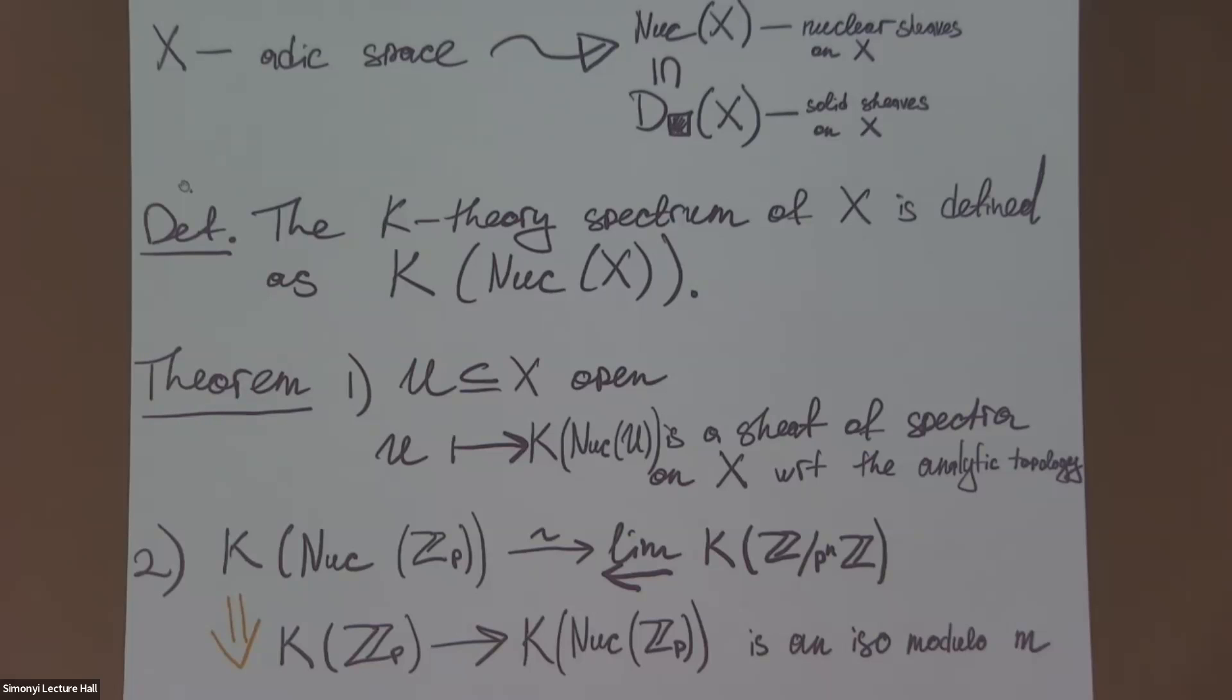I want to answer your question first. If m is prime to p, then this simply follows from Gabber's rigidity. In general you have to observe the following. Take the algebraic K-theory of ℤ_p and ask, is this map from the algebraic K-theory of ℤ_p to this inverse limit an isomorphism modulo p? It is.